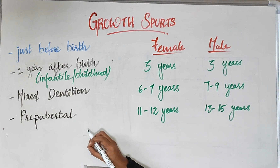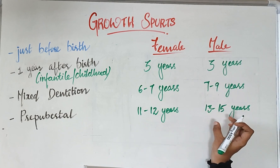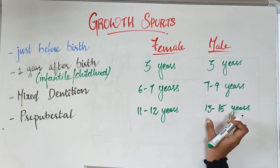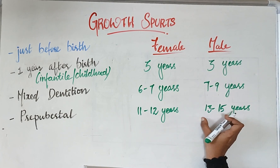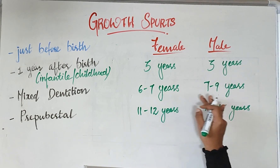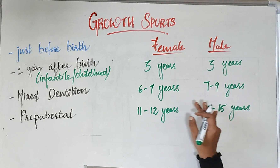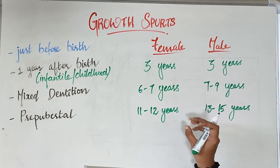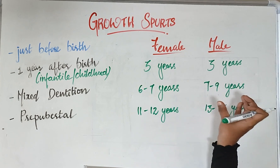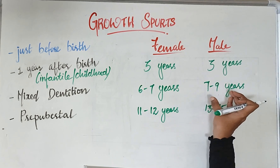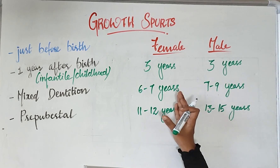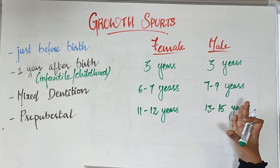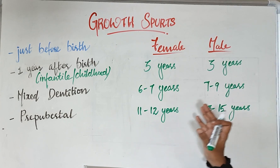The pre-pubertal growth spurt occurs at 11 to 12 years for females and 13 to 15 years for males. The age variation between females and males is due to hormonal changes that occur during development. As you can see, the growth spurt in males starts at a later age than in females.